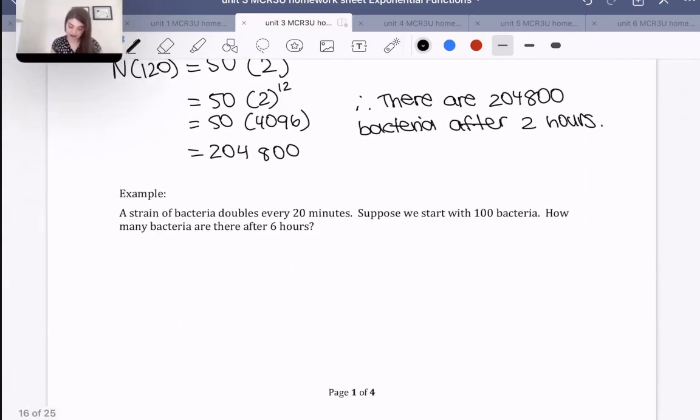Here's another example. A strain of bacteria doubles after every 20 minutes. Suppose we start with 100 bacteria. How many bacteria are there after 6 hours? Same thing as before. We have it doubles every 20 minutes and they'd like to know after 6 hours. What I need to know is how many 20-minute periods are in 6 hours. If we think about it, in 1 hour there's 3 20-minute periods. And so with 6 hours, there would be 6 times as many, so 18 likely. Let's see, 6 hours is equal to 360 minutes. And when we divide that by 20, we'll get 18. So therefore it's going to double 18 times.